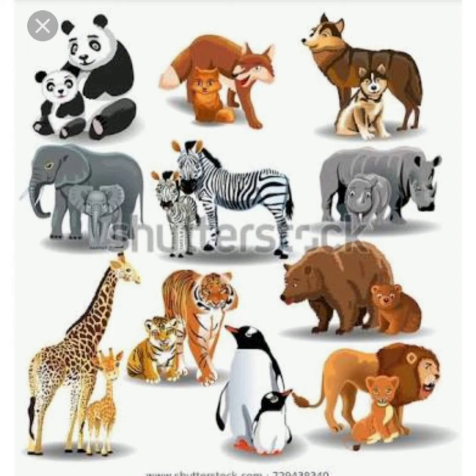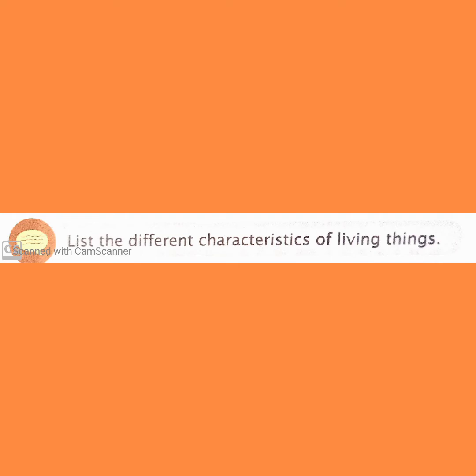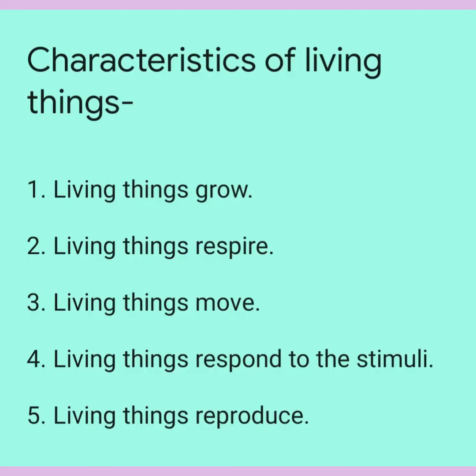Living things reproduce to give birth to babies of their own kind. Now, why is it so important? It is important to continue life on earth. Children, you have been learning about living things. Let's list their different characteristics: living things grow, living things respire, living things move, living things respond to stimuli, and living things reproduce.